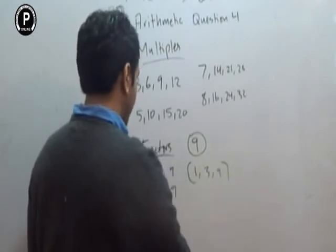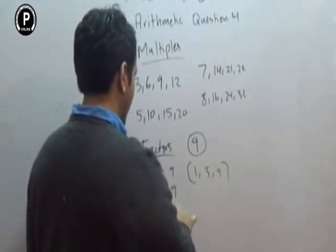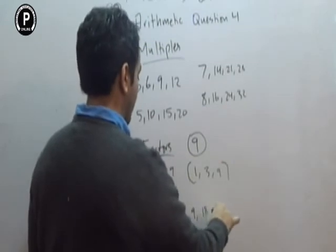Whereas the multiples of 9 are what? 9, 18, 27.